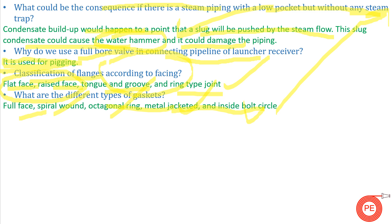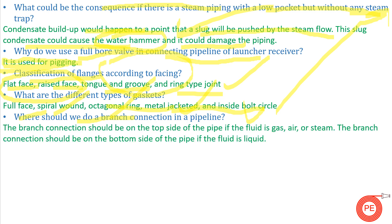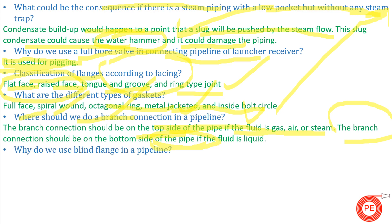Next question: where should we make a branch connection? If the fluid flowing through the pipe is gas, air, or steam, the branch connection is given on the top side of the pipeline. If the fluid is water or any liquid, the branch connection is done at the bottom side of the pipe.